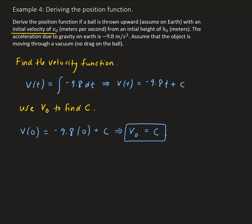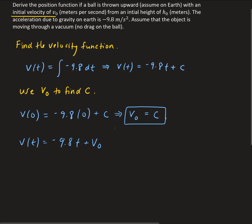So our velocity function is v of t equals negative 9.8t plus v naught. Now we're going to go ahead and find the position function.